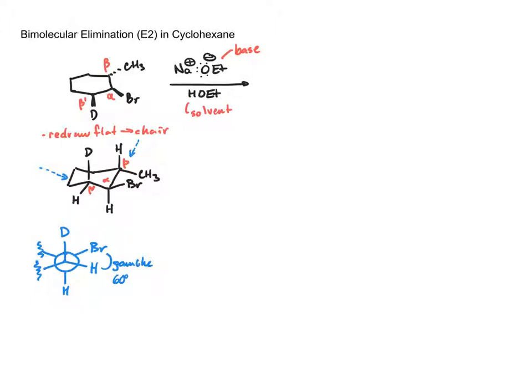If we look down the other beta carbon we're also going to see that we don't have the correct orbital relationship that we need. We have hydrogen up, the ring, the methyl group, hydrogen down, bromine, and the ring. Again it's a 60 degree relationship, a gauche relationship. That's not what is required to do the E2.